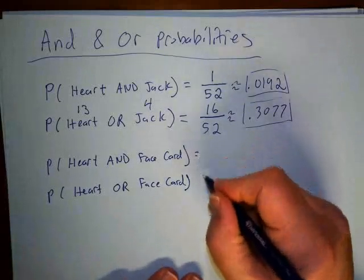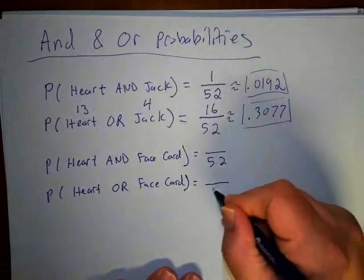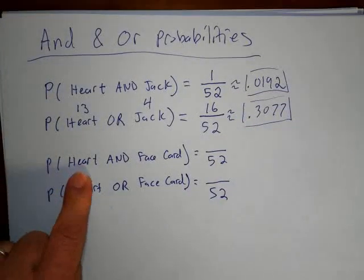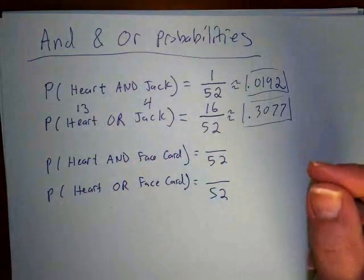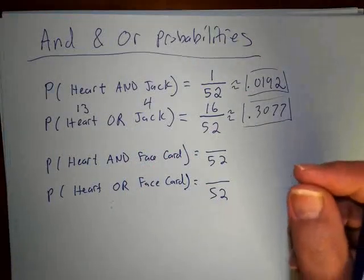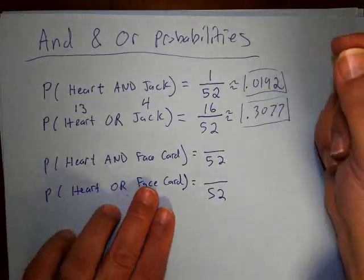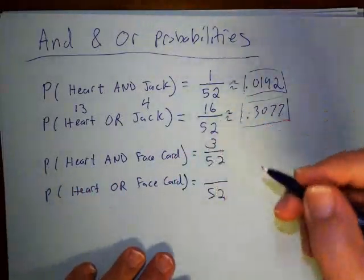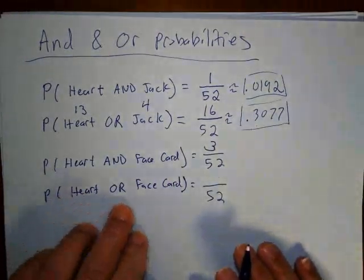The bottom number is 52 for both. For heart AND face card, the card must be both at once. The only cards that qualify are the jack of hearts, queen of hearts, and king of hearts — 3 cards. So the probability is 3 out of 52.